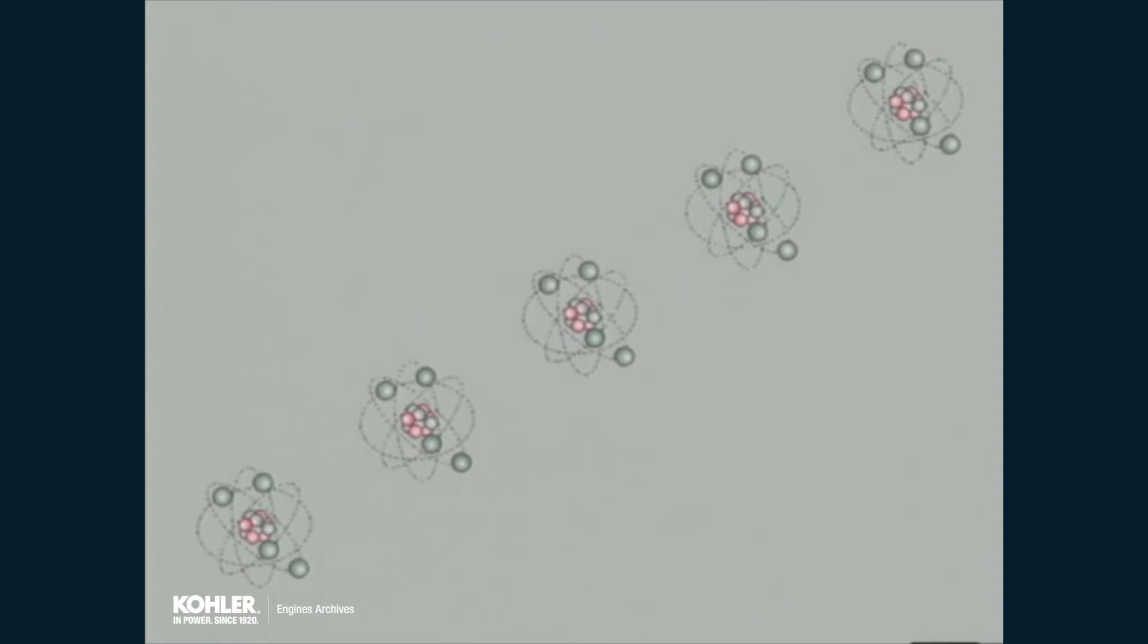Other materials hold their electrons tightly, so they do not move easily from one atom to another. These materials are called insulators. Insulators are used to isolate and contain electricity in the desired conductors.